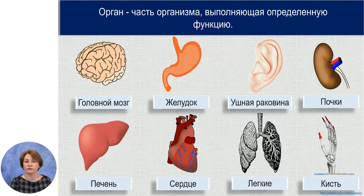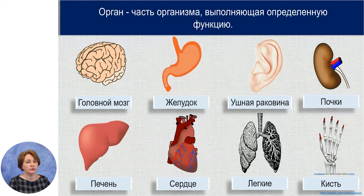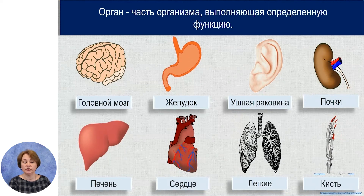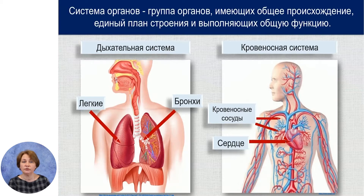Начнем урок мы с того, что вспомним некоторые биологические термины. Орган – это часть организма, которая выполняет определенную функцию. Наш организм состоит из множества органов: например, головной мозг, желудок, ушная раковина, почки, печень, сердце, легкие и кисть руки. Органы не работают самостоятельно, они объединяются и образуют системы органов. Система органов – это группа органов, имеющих общее происхождение, единый план строения и выполняющих общую функцию.